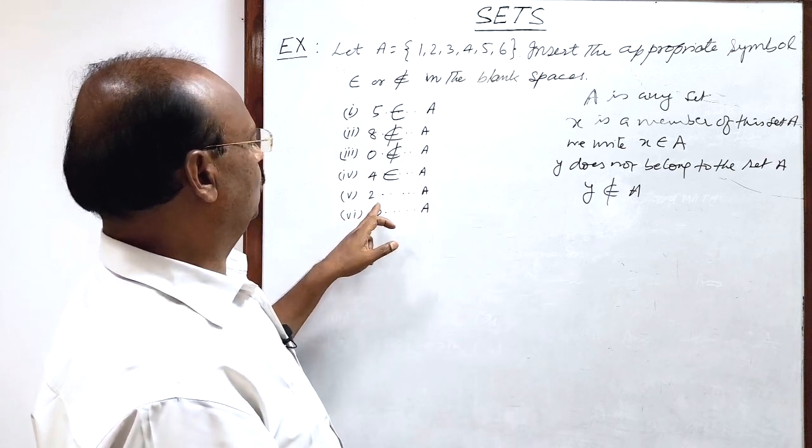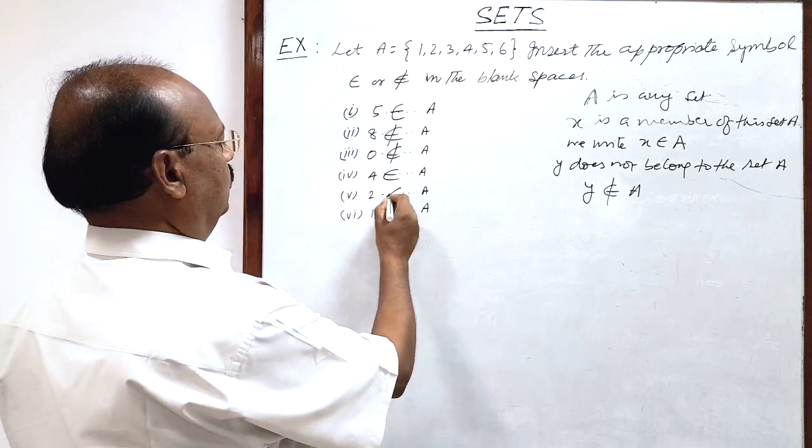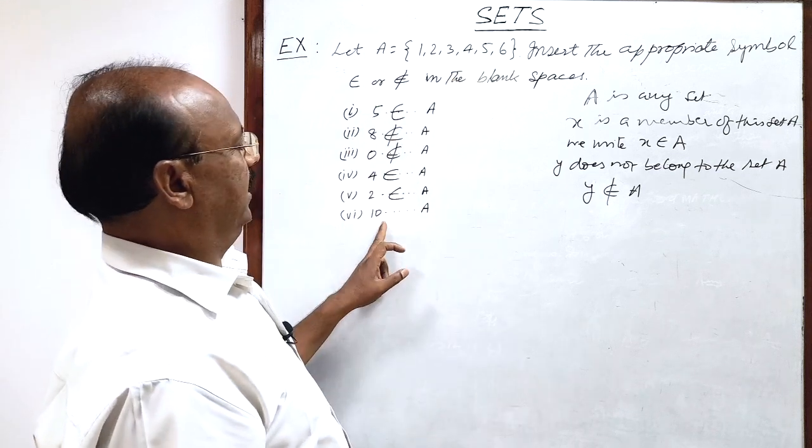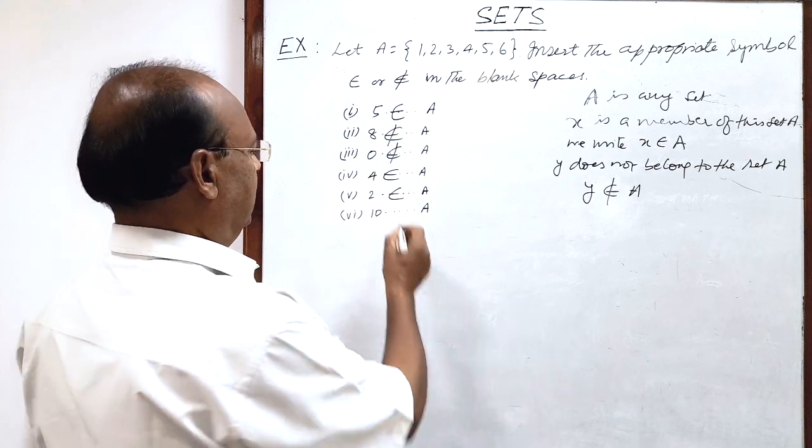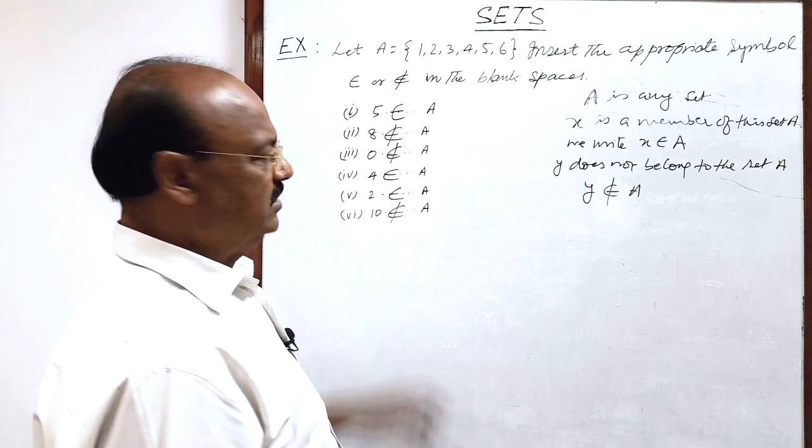Fifth, 2. 2 is here. So 2 belongs to A. 10 is not here, not a member of this set. So 10 does not belong to A. Very simple.